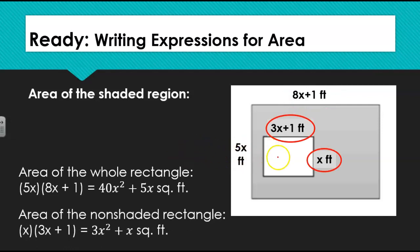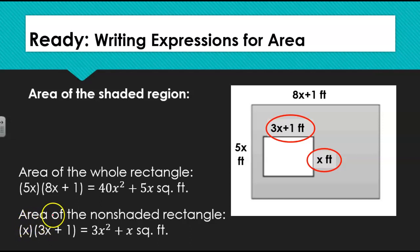For the smaller rectangle, we will multiply the length by the width. Again, we will use the distributive property to distribute the x to the 3x and the x to the 1, to get 3x squared plus x square feet.